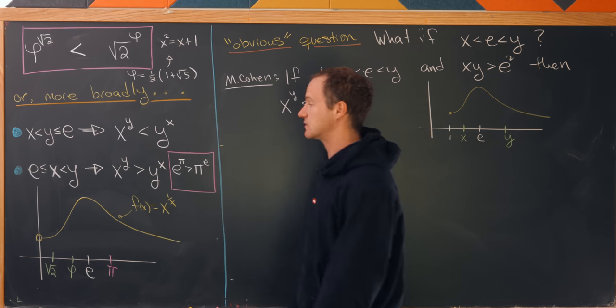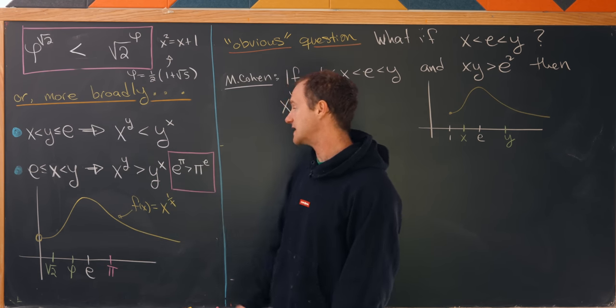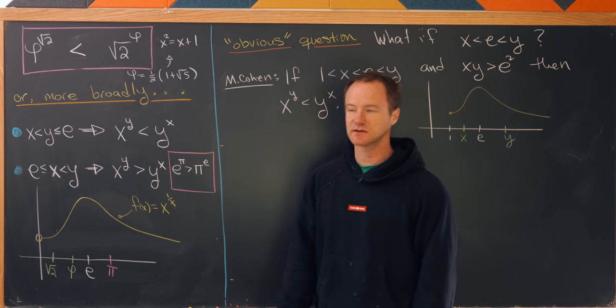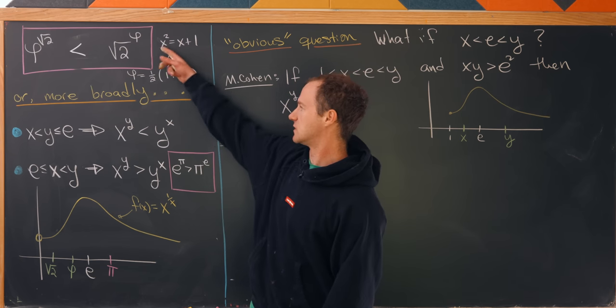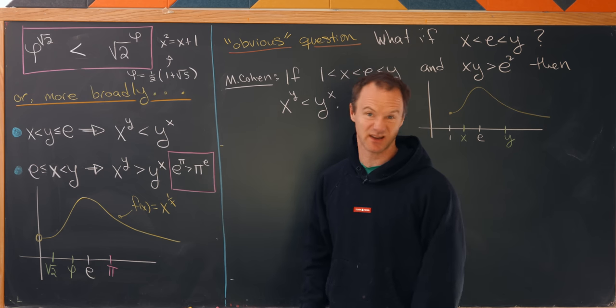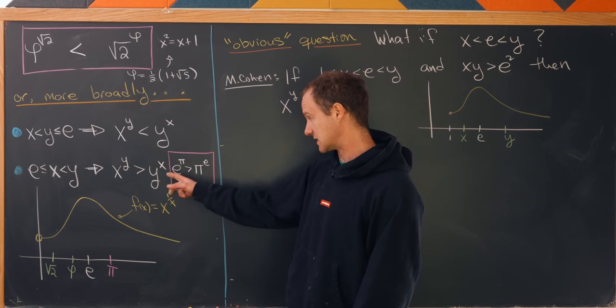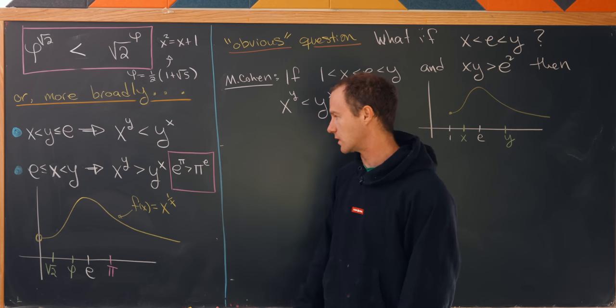then x to the y is bigger than y to the x. And our result is a case of this first one, but maybe the classic YouTube result that e to the pi is bigger than pi to the e is a classic version of the second one.